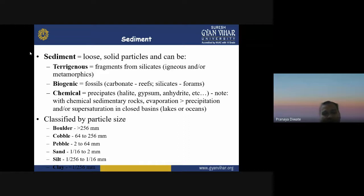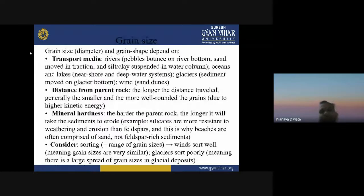Chemical sedimentary rocks include evaporites, which are precipitated by supersaturation in a closed basin. You can classify particle size: boulder is more than 256 mm, cobble is 64 to 256 mm, pebbles are 2 to 64 mm, sand is 1/16 to 2 mm, and then silt and clay. Grain size and grain shape depend on the transport media — a river carries pebbles that bounce on the bottom, while silt and clay are suspended in the water column.